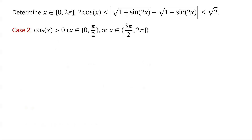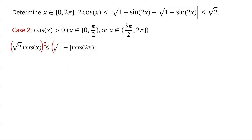Case 2: if cos(x) > 0, that is, if x is in [0, π/2) or x is in (3π/2, 2π]. Given that cos(x) > 0, we can square both sides without reversing the inequality. So the inequality becomes 2cos²(x) ≤ 1 - |cos(2x)|.